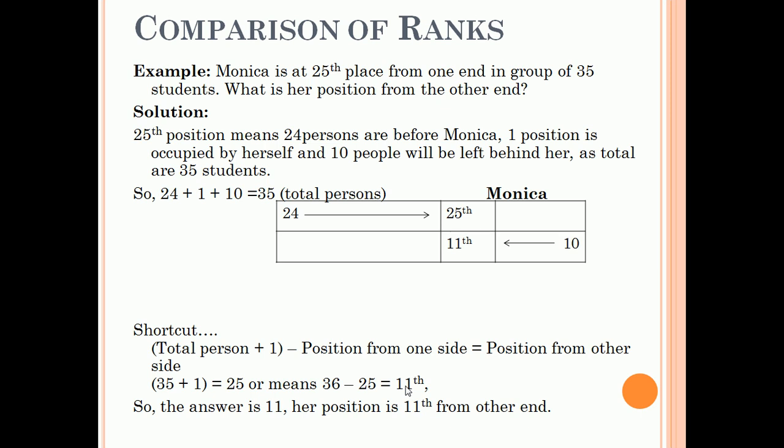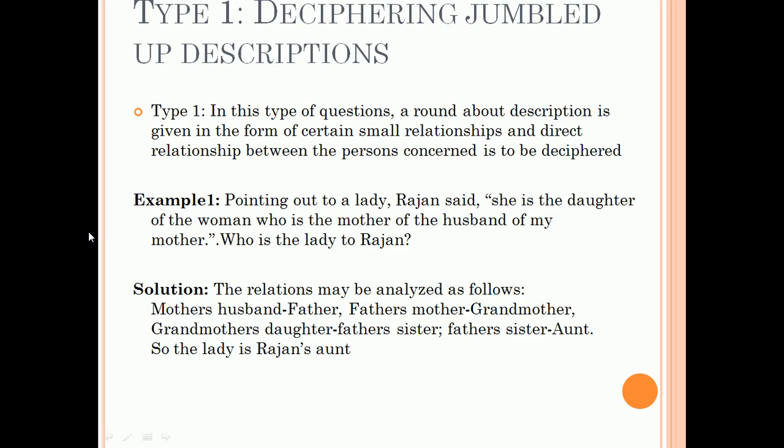Now we will come to blood relations. There are three types of questions that can be asked in these. The first type is deciphering jumbled up descriptions. In this type of questions, a roundabout description is given in the form of certain small relationships, and the direct relationship between the persons concerned is to be deciphered.